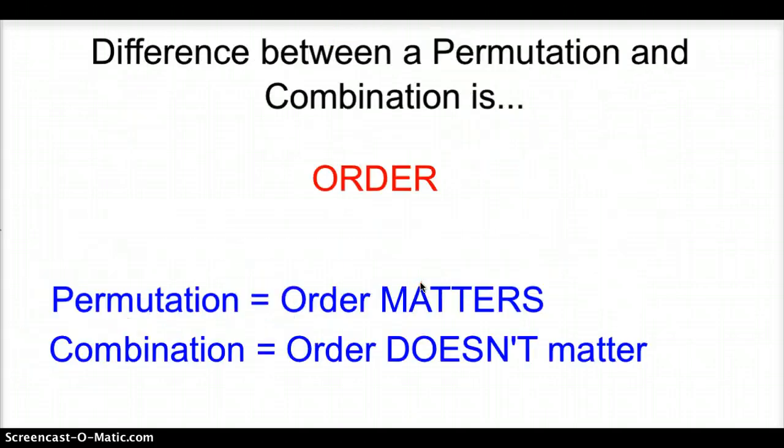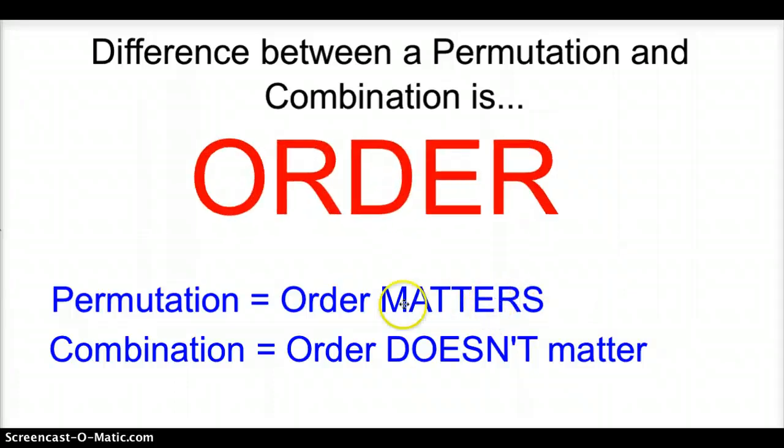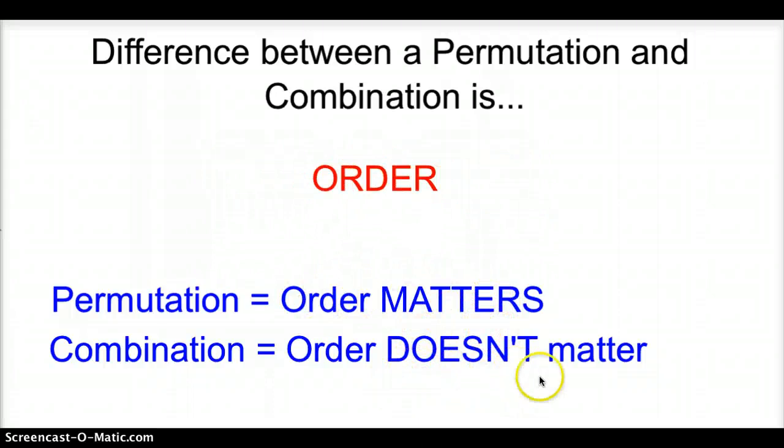Now, what is the big difference between permutations and combinations? It is order. Order matters for a permutation. Combination, order does not matter. Combination, you are thinking groups. You are thinking books that you read, meals that you eat. Permutation, you are thinking standing in line, placements.